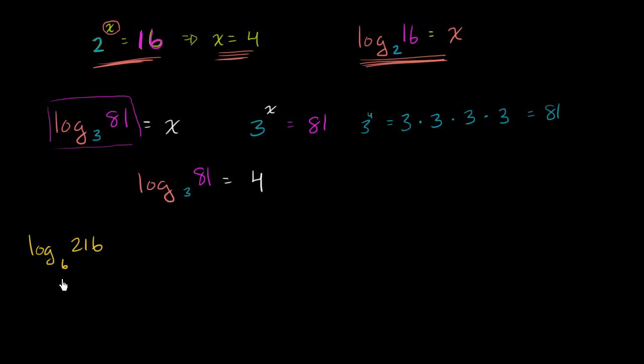Well, we're asking ourselves, what power do we have to raise 6 to to get to 216? 6 to the first power is 6. 6 to the second power is 36. 36 times 6 is 216. This is equal to 216.